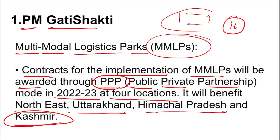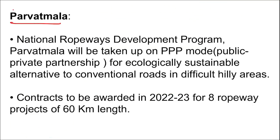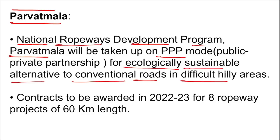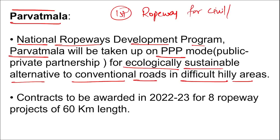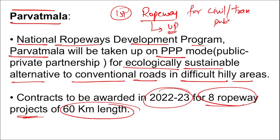Parvatmala — the National Ropeway Development Programme — will be taken up on the PPP model as an ecologically sustainable alternative to conventional roads in difficult hilly areas. The first ropeway service for civil or public transportation was started in Uttar Pradesh. Contracts will be awarded this year for 8 ropeway projects totaling 60 kilometers in length.